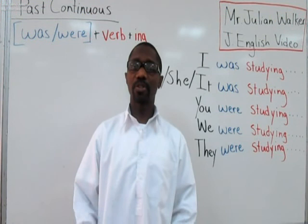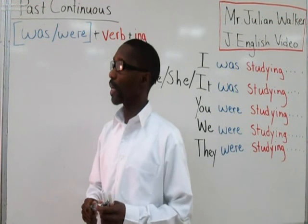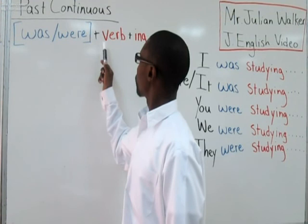Hello, my name is Julian Walker, and this is another Jay English video. Today we're going to look at past continuance. I have an example here of how to form past continuance. You can see I have the B verb was or were, plus verb, plus ing.